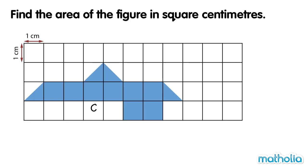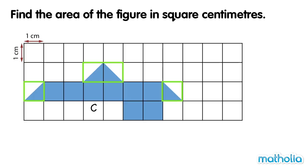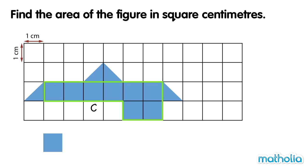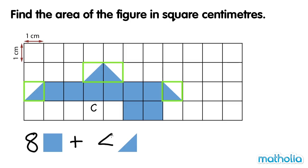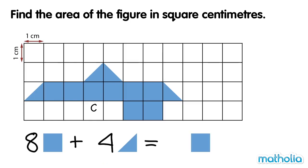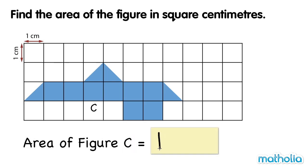Figure C is made up of whole grid squares and half grid squares. To find the area, we add all of the squares together. There are eight whole squares and four half squares. Four halves is equal to two wholes. Eight whole squares plus two whole squares is equal to ten whole squares. The total area is equal to ten squares. The area of figure C is ten square centimetres.